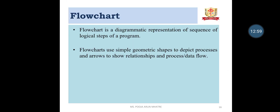Flowchart. A flowchart is a diagrammatic representation of a sequence of logical steps of a program — that is, a diagrammatic representation of an algorithm. Flowcharts use simple geometric shapes to depict the processes, and arrows to show the relationship between processes or data flow.